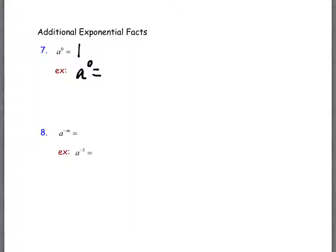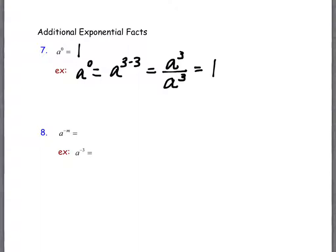Where would a^(3−3) come from? It came from property number two — a^3 divided by a^3. I'm looking at that property in reverse, going from the right-hand side back to the left. Now I have a number a^3 divided by that same number a^3. What's a number divided by itself? It's one. Any number divided by itself is equal to one — and that's why a^0 = 1.